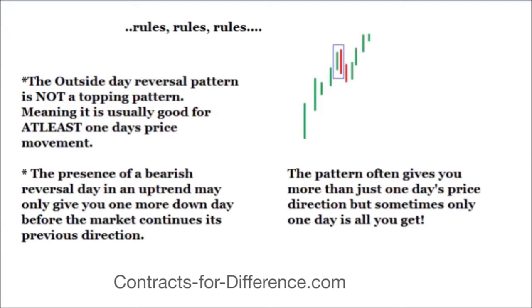Something textbooks don't really point out is what may happen after a successful pattern. You might only get one day in the direction the pattern is pointing. If you see a downside reversal in an uptrend, don't expect the price to fall 10–20% and make a big gain on a short — it might not happen. It normally always gives you at least one day, but that might be all you get. Quite often you'll get a couple of days, but don't assume it will run far.